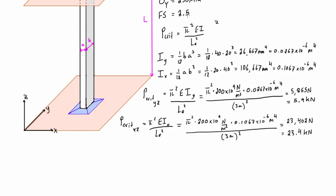Now we can find the allowable load. With a factor of safety of 2.5, recall that FOS = ultimate load / allowable load. Our ultimate load for buckling is 5.9 kN, so the allowable load = 5.9 kN / 2.5 = 2.36 kilonewtons.